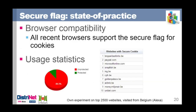Looking at TLS-enabled websites in Belgium, around 10% are actually using the secure flag, meaning 90% of websites are not protecting their cookies in mixed mode. These are results from our own experiments. We show statistics on how many websites use a given technology, plus a top 10 of the most frequent responses. In some cases the list has fewer than 10 entries, meaning fewer than 10 websites in our experiment actually used that technology.